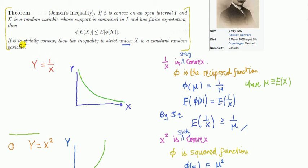Note the bottom part of this theorem where it says if φ is strictly convex, which is so in our case, then the equality is strict unless X is a constant random variable, so I've just allowed it so that X may be a constant random variable.